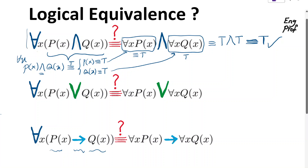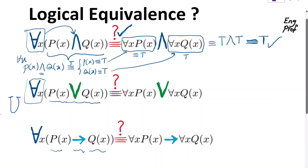This means we are allowed to distribute the universal quantifier over a conjunction. Now let's focus on the second example: for all x from a given domain, is p(x) or q(x) equivalent to distributing the universal quantifier over disjunction? Let's see why there might be a problem here — we'll use a counter-example.